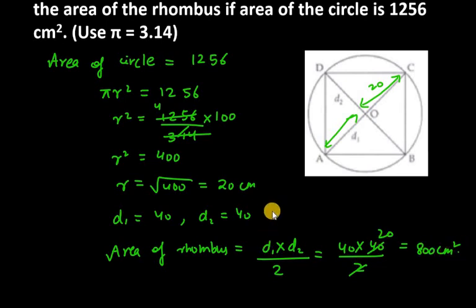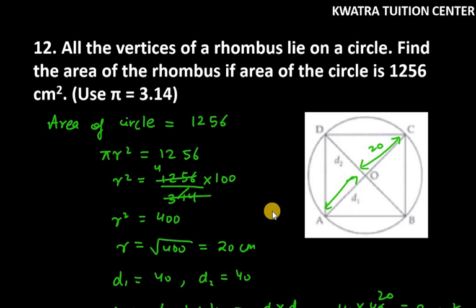So, this is the area of the rhombus, 800 cm². This is the answer for question number 12. Thank you.